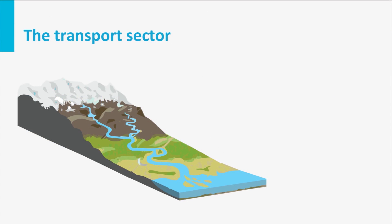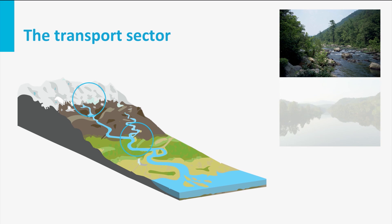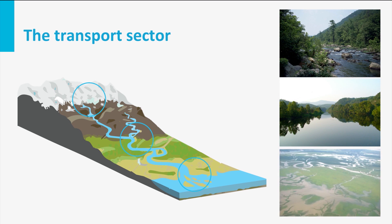Eroded sediments are taken over by water or wind and transported to the sea. In the mountains, they will be carried by irregularly flowing torrents and creeks. In the foothills and in the wide, gentle plains, rivers will be wider, often meandering and will irregularly flood the surrounding plains. Eventually, the rivers will reach the sea, often forming large deltas and delivering the sediments to the final sink, the marine domain.